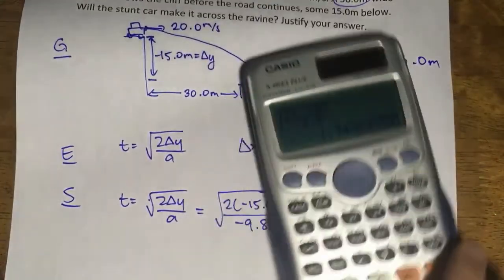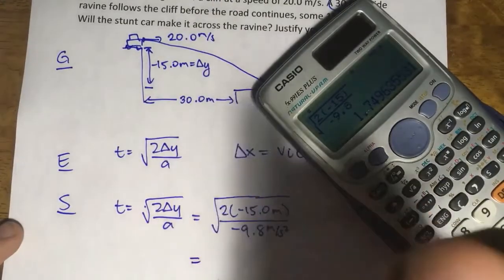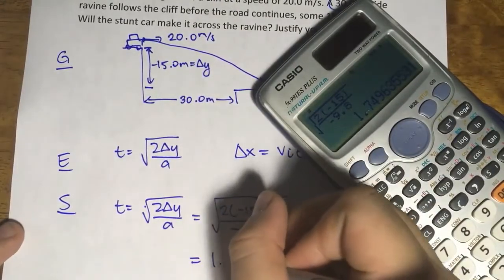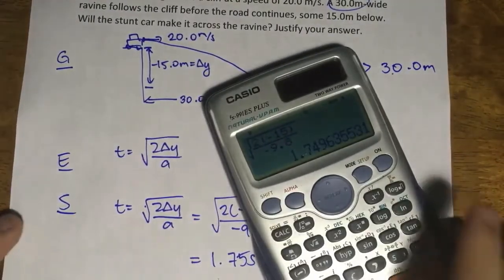So that's square root of 2 times negative 15 all over negative 9.8, which gives me the value of 1.7496. So that's equal to 1.75 seconds. But we'll still use the exact value when computing. So let's go on to part 2.